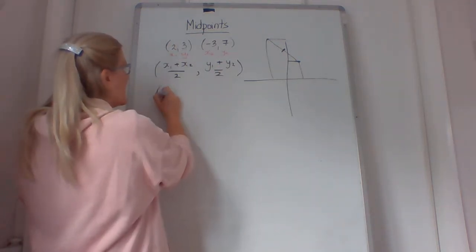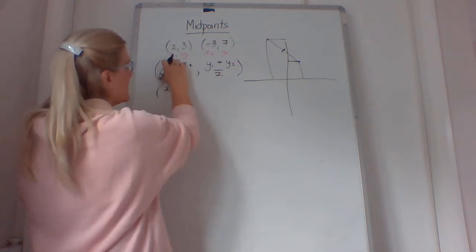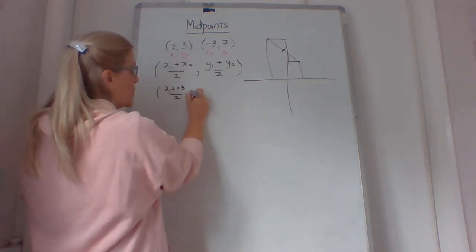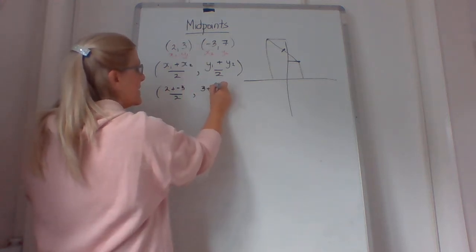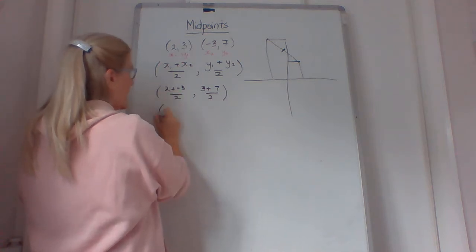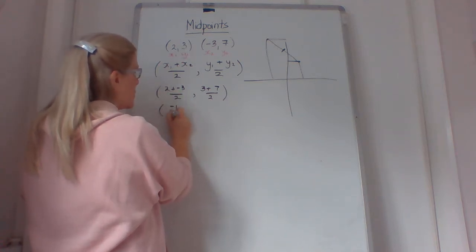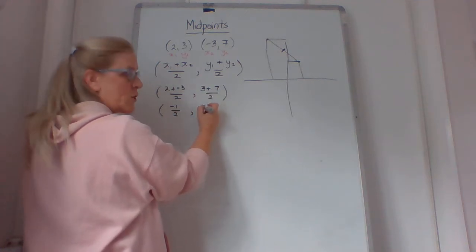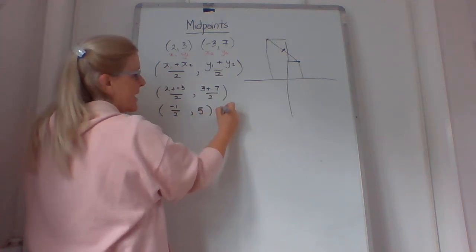So we're going to go 2 plus negative 3 divided by 2, and 3 plus 7 divided by 2. So 2 plus negative 3 is negative 1 over 2, and 3 plus 7 is 10 over 2, which is 5. So that's the midpoint.